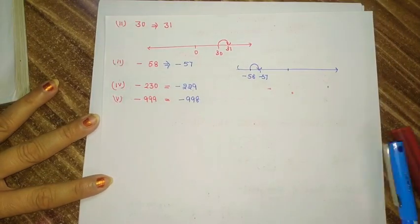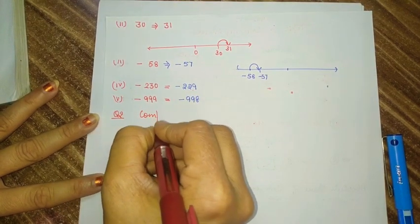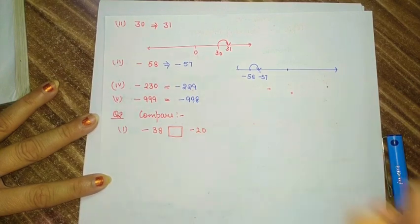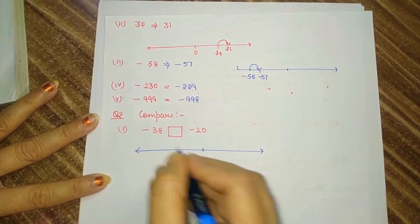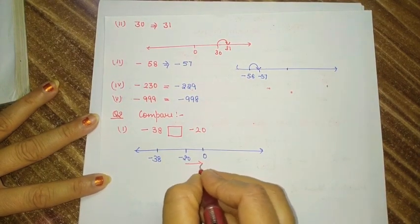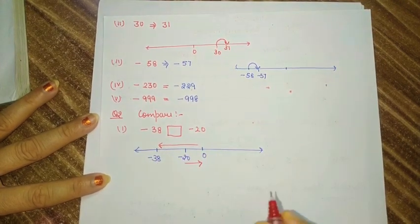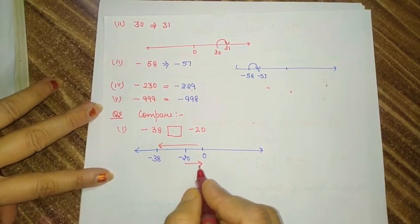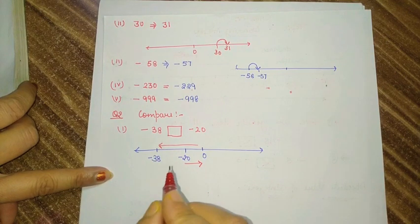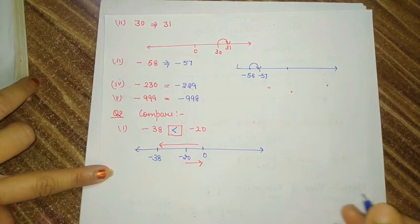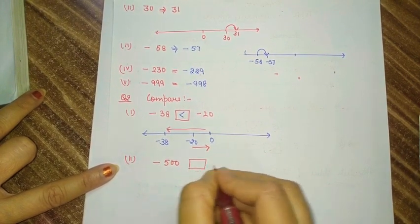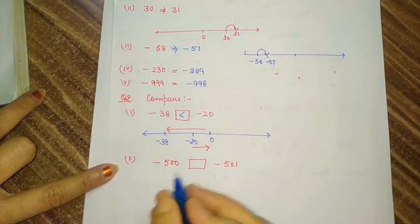Now move on to the next question. We compare 8 and minus 20 on the number line. Minus 20 is here and minus 38 is further along. Which number is near to zero? That is minus 20. Which is far from zero? Comparing minus 500 to minus 501 — which is near to zero? Minus 500 is bigger.